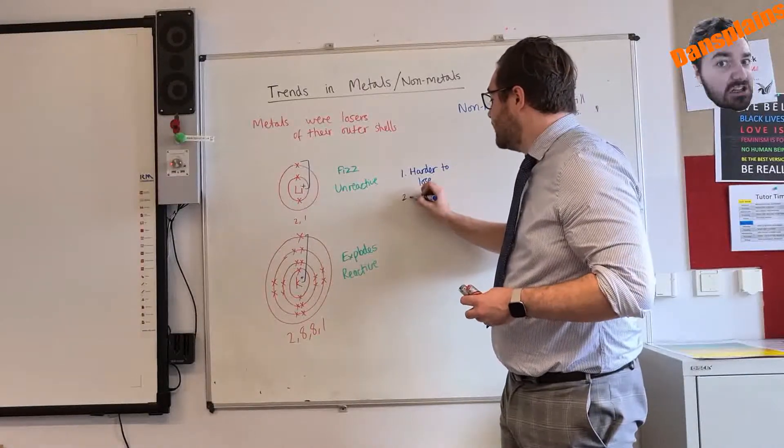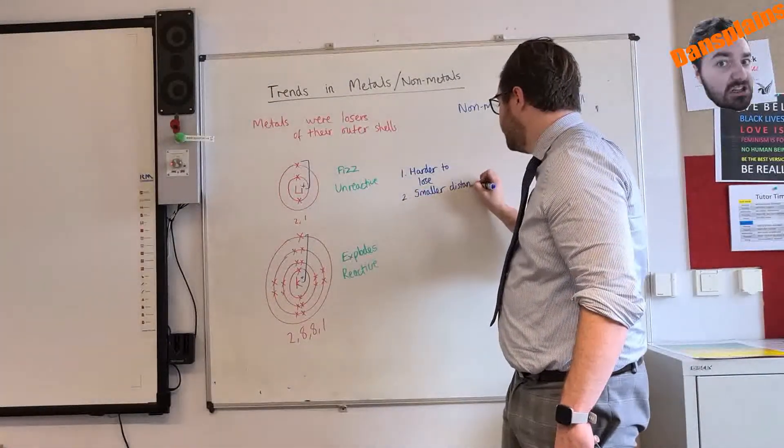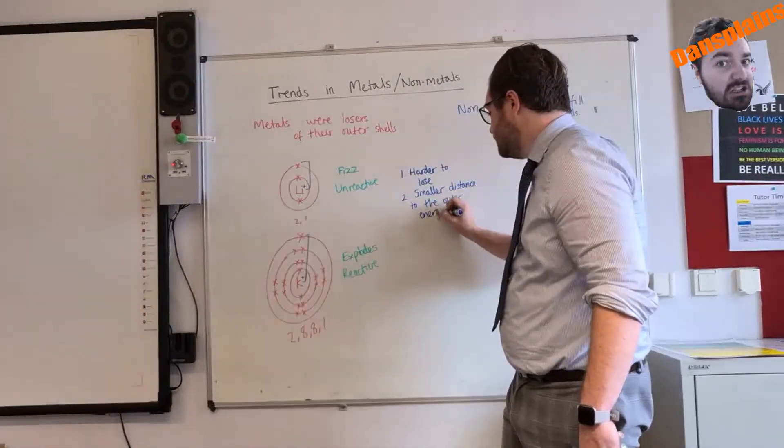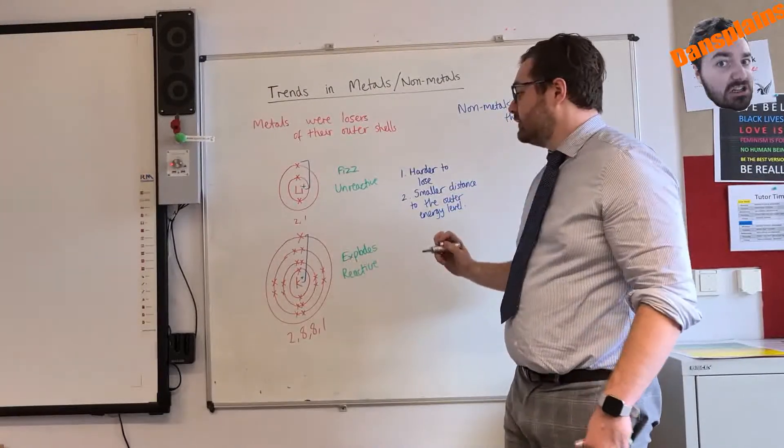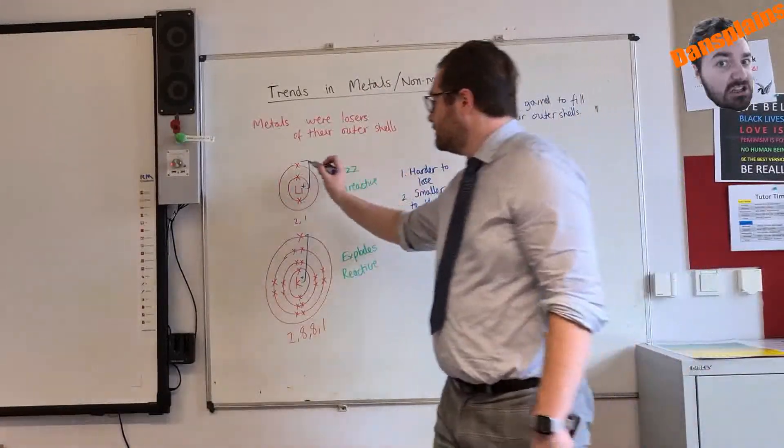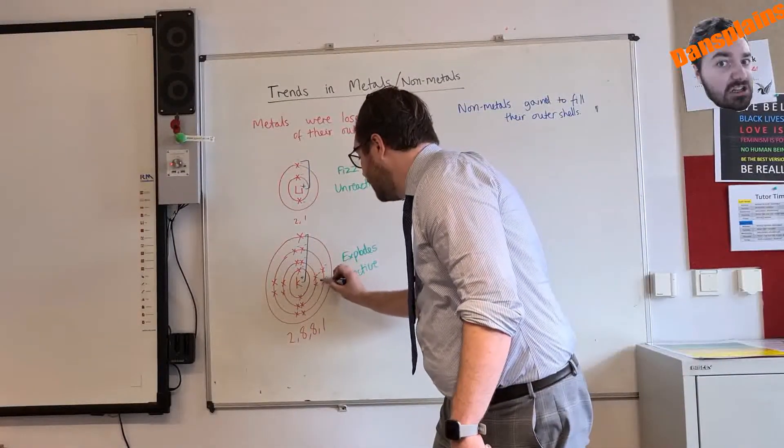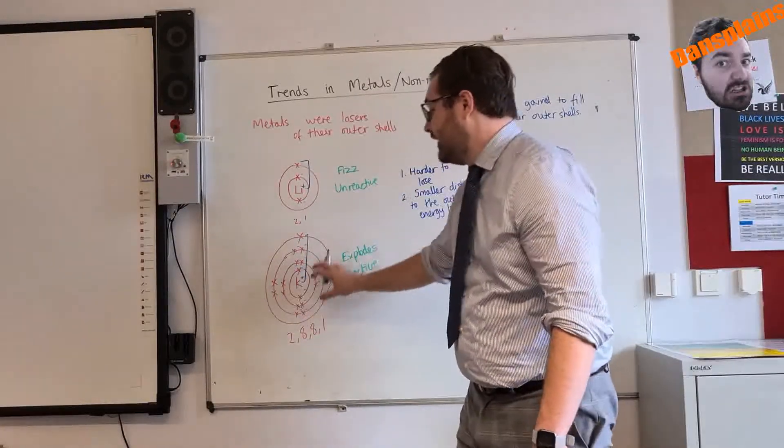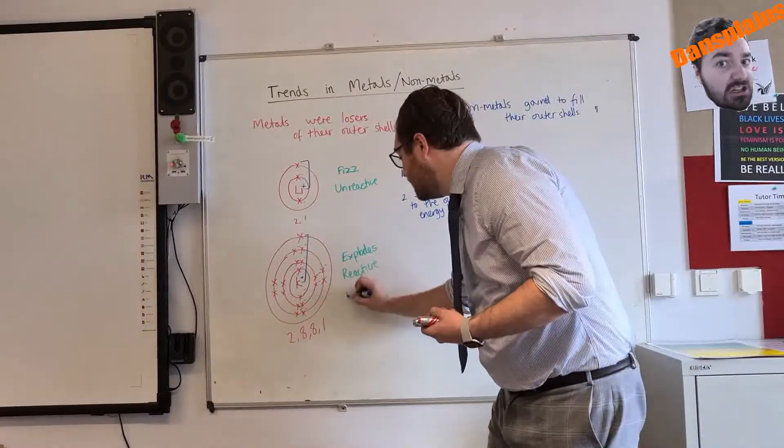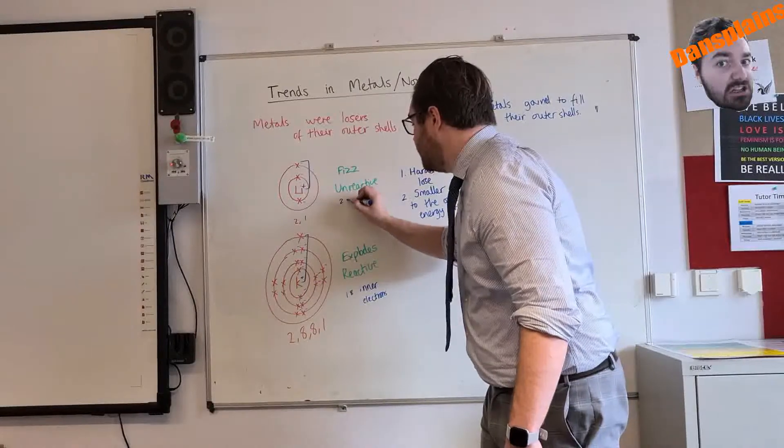So lithium has a small distance, so it's harder to lose because it's a smaller distance to the outer energy level. The next thing we have is, on lithium, we have 2 electrons on the inside. All of the electrons have negative charge. On potassium, I have 18 electrons in the inside of my shells. So I have 18 in the shells, and here I have 2 inner electrons.